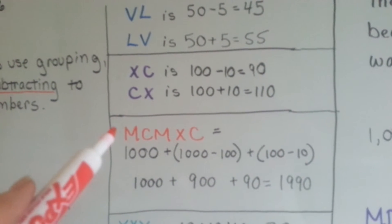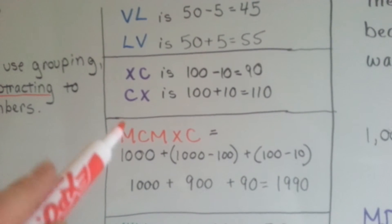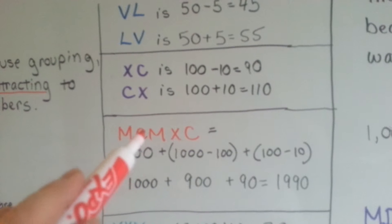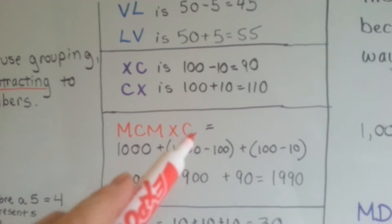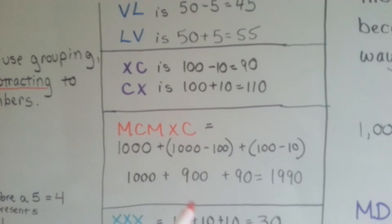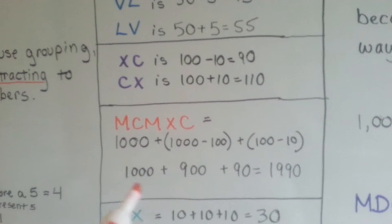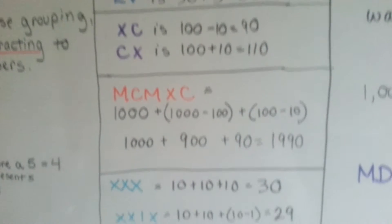This number is 1990. It's 1,000 and then the CM means 1,000 minus 100. And then 100 minus 10. So the 1,000 minus 100 is the 900. And 100 minus 10 is the 90, which makes 1,990.